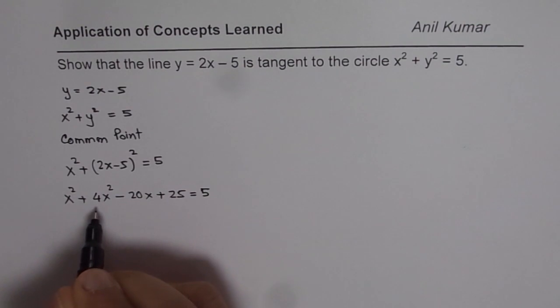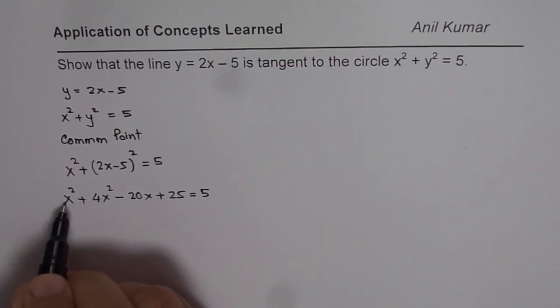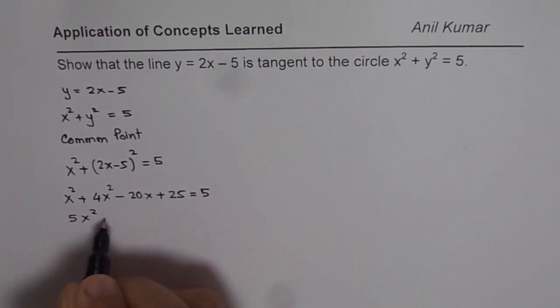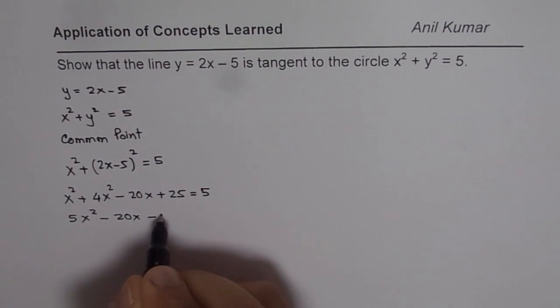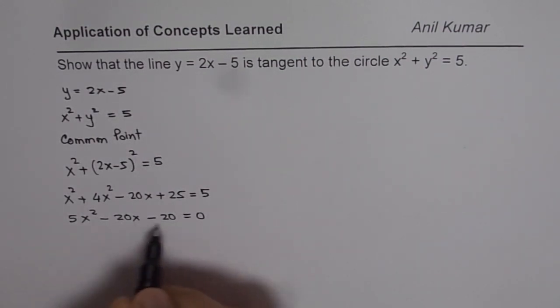So bring them together. So you get 4x square plus x square is 5x square. Then we have minus 20x, bringing it here, we get minus 20 equals 0, which can be simplified further.